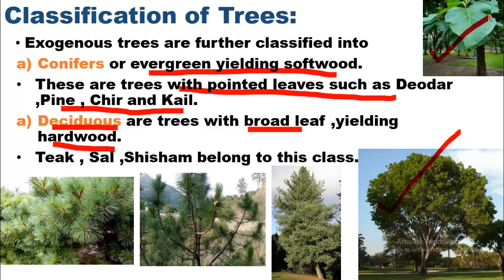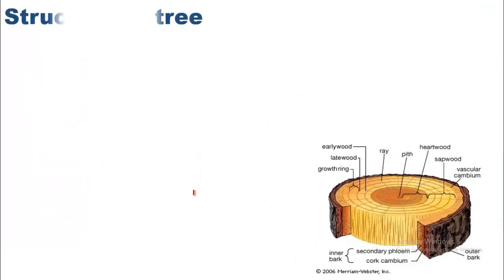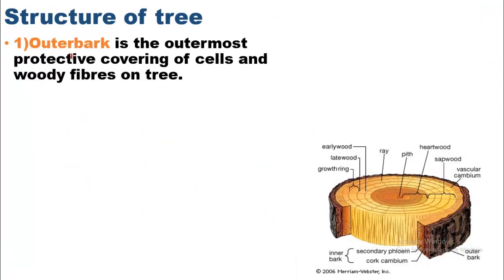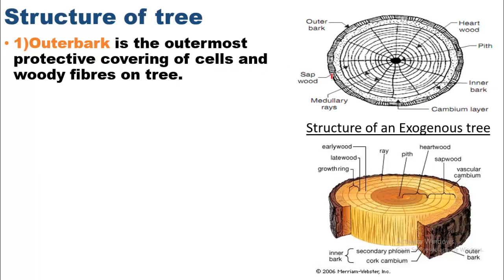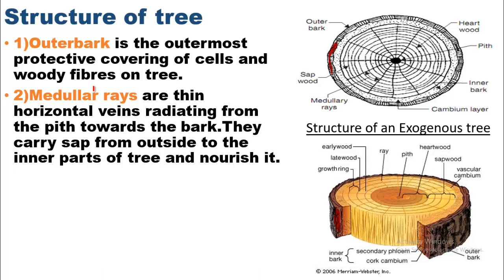Now, coming towards the structure of a tree. The first part is the outer bark, which is the outermost protective covering of cells and woody fibers on trees. As you can see in the diagram, the part visible from the outside of the tree is the outer bark. The second part is medullary rays, which are thin horizontal veins radiating from the pith towards the bark.